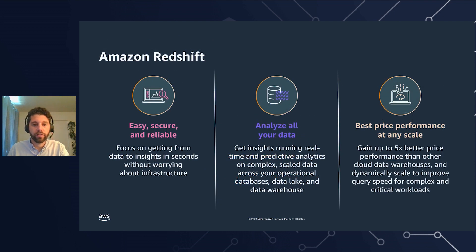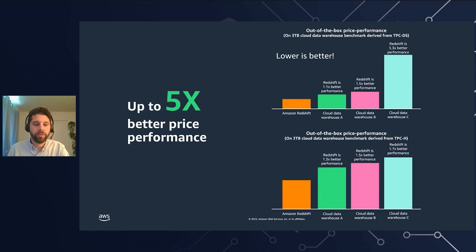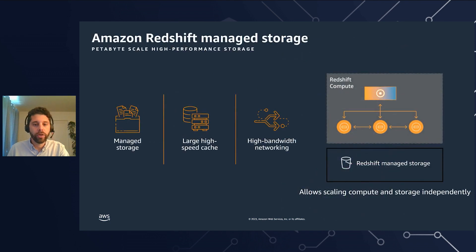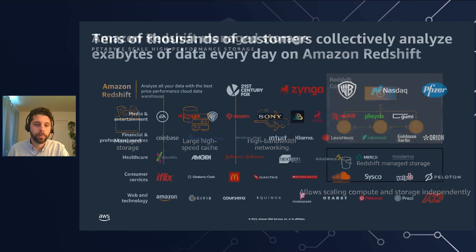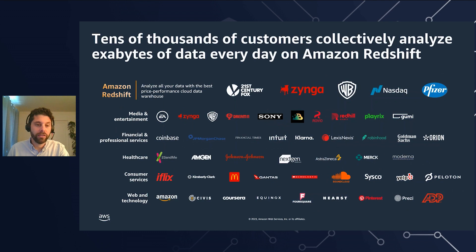Starting with Amazon Redshift, which is easy, secure, and reliable — it allows you to analyze all your data with best price performance at any scale. Redshift delivers up to 5x better price performance than other cloud data warehouse solutions. The separation of compute and storage in Amazon Redshift with Amazon Redshift managed storage enables petabyte-scale high performance storage and allows scaling of compute and storage independently. Tens of thousands of customers collectively analyze exabytes of data every day on Amazon Redshift.